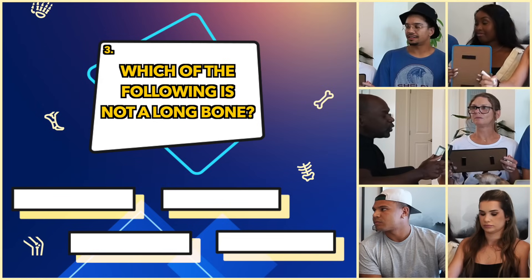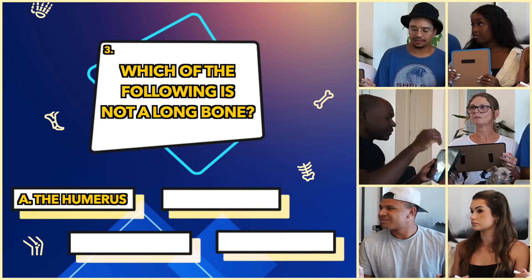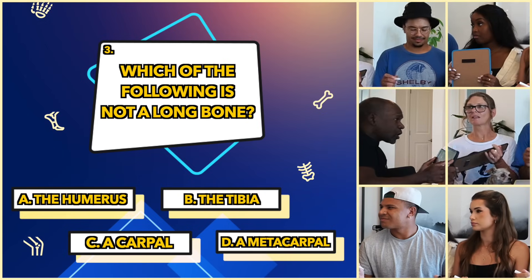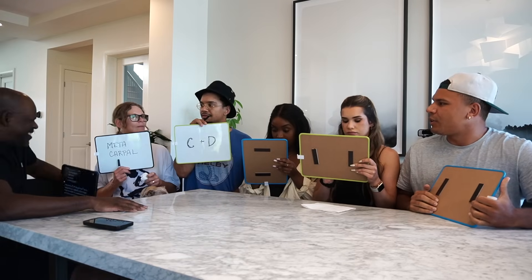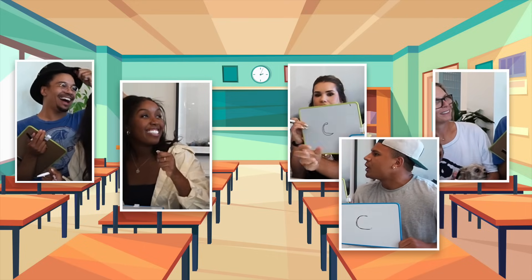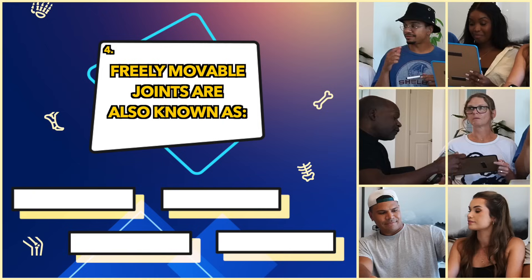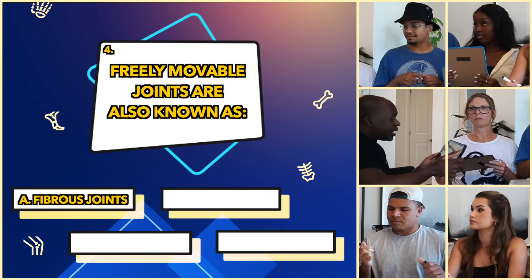This is a multiple choice. Which of the following is NOT a long bone? A: the humerus, B: the tibia, C: a carpal, or D: a metacarpal? Carpal tunnel — you get it from gaming too much. Hands, small bone. I meant carpal but I put D. I'm literally the only person to put C. The correct answer is C — a carpal is not a long bone.